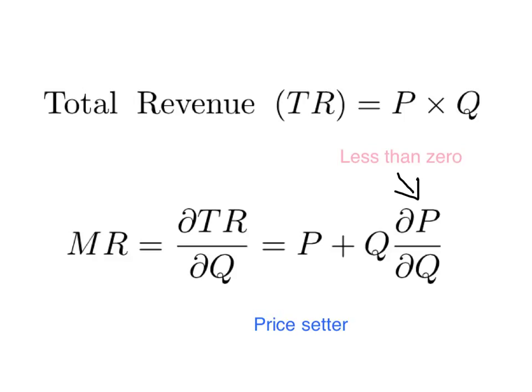Why is that? Because marginal revenue has two components. When you sell another unit, your revenue goes up by the price — that's the first part. But to sell another unit, you're going to have to drop the price on all the other units that you could have sold at a higher price. This second term captures how much you have to drop the price on all the inframarginal units.